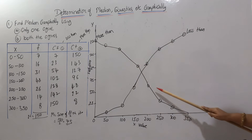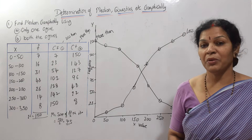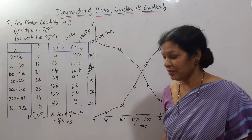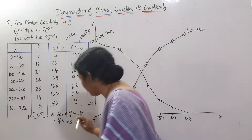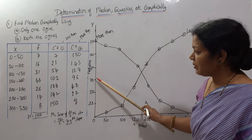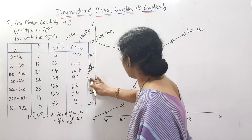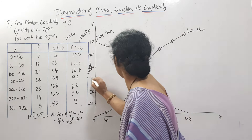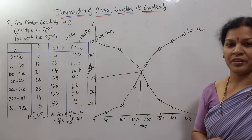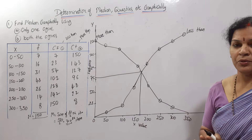Now we find the median. The formula is: median = size of n/2-th item. With n = 150, that is the 75th item. On the y-axis, we locate 75 and draw a horizontal line across to the less than ogive curve. Dropping a perpendicular to the x-axis gives the median value, which falls in the class 150–200. On graph paper this would give exactly 172.